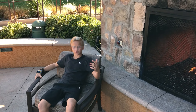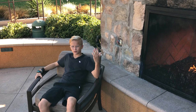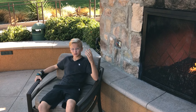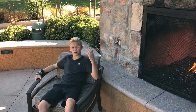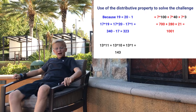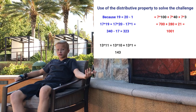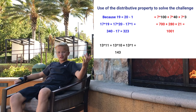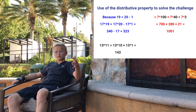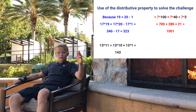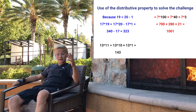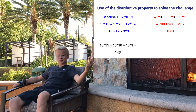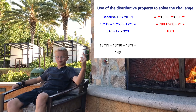We can even use the distributive property in 3 parts. With 143 times 7, you just break up 143 into 100 plus 40 plus 3 and multiply all those by 7. 7 times 100 is 700, then 7 times 40 is 280, and lastly 7 times 3 is 21. First, let's add 280 plus 21 to get 301, and 700 plus 300 is 1000, plus 1 gives us 1001.